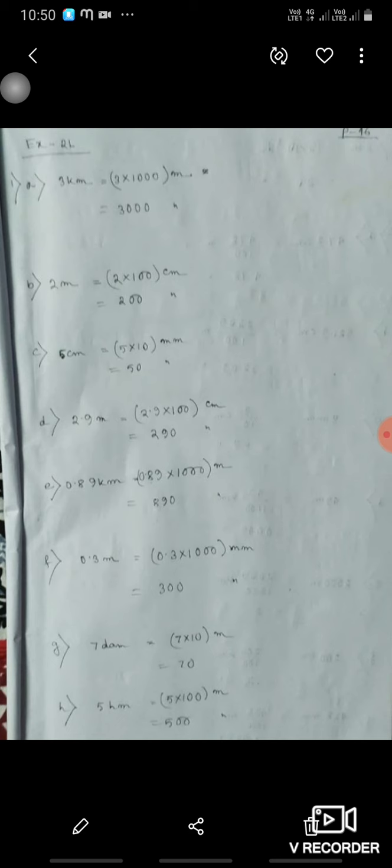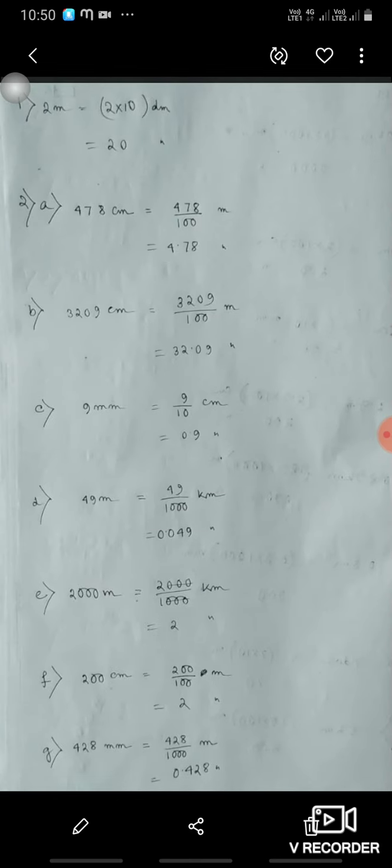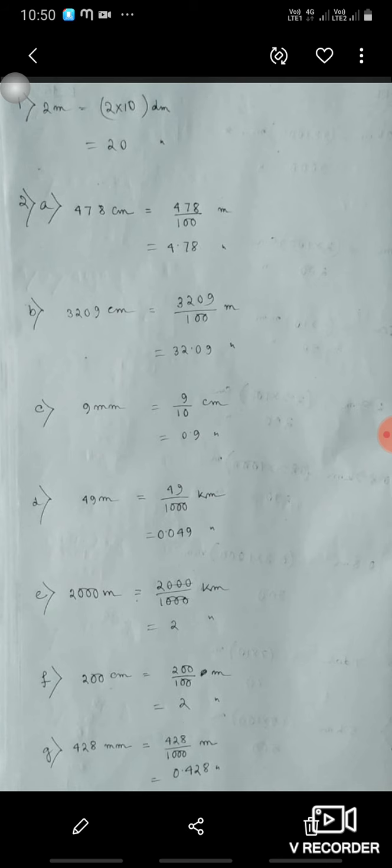Then 0.89 kilometer means 0.89 into 1000 means 890 meter. 0.3 meter means 0.3 into 1000 means 300 millimeter. 7 decameter means 7 into 10 means 70 meter. 5 hectometer means 5 into 100 meter means 500 meter. 2 meter means 2 into 10 decimeter, 20 decimeter.